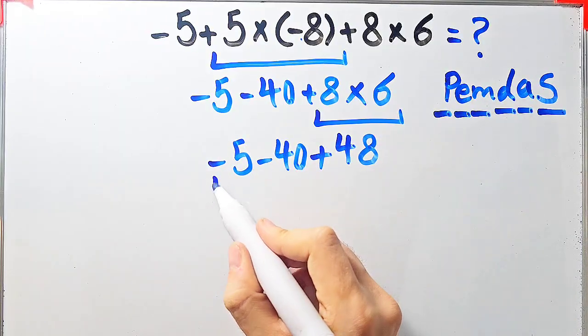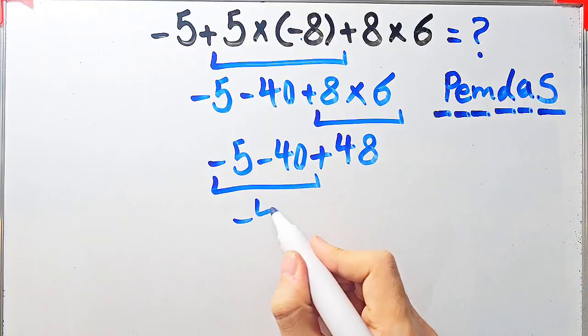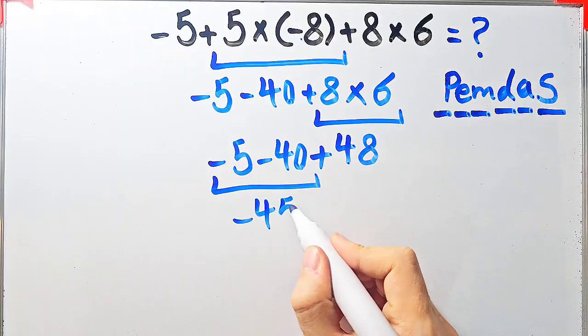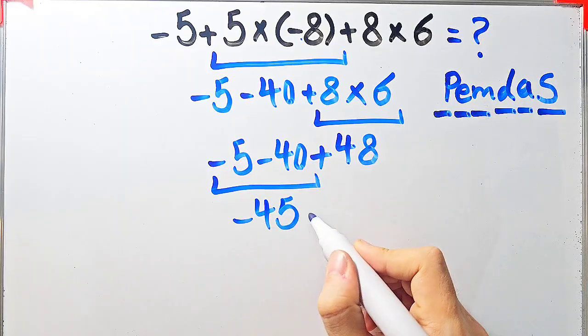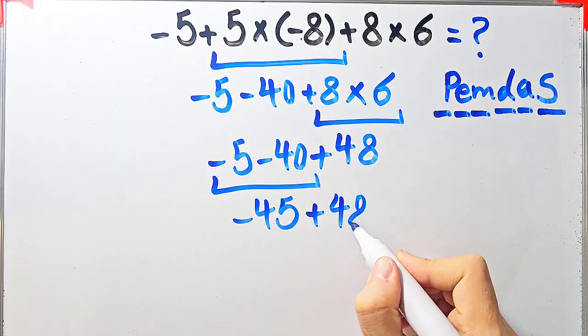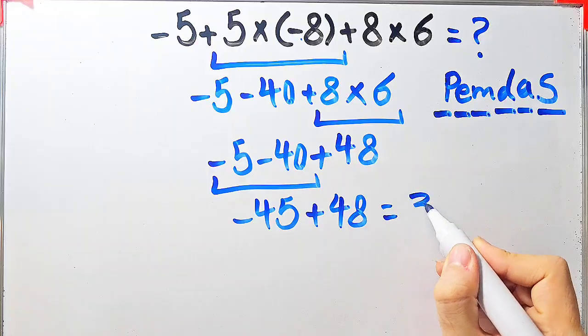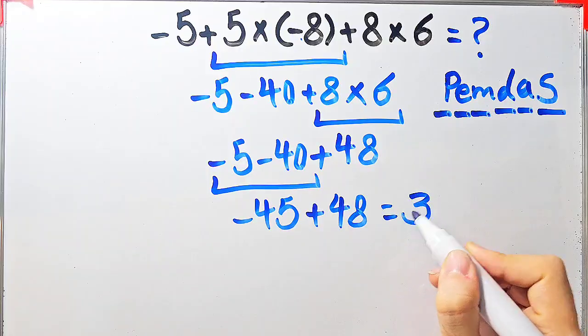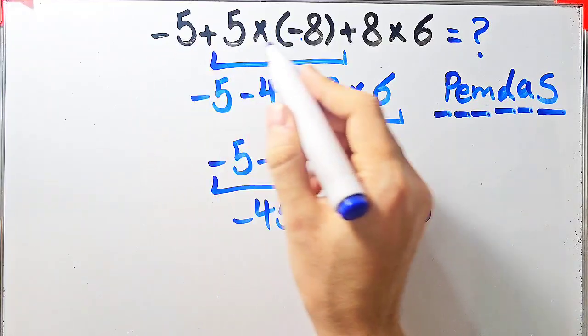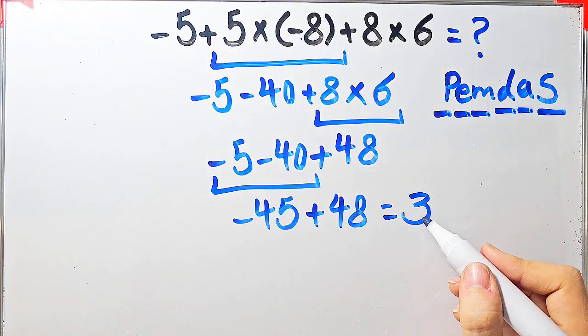Negative 5 minus 40 equals negative 45. Now we have negative 45 plus 48. Negative 45 plus 48 equals 3. The final answer of this question equals 3.